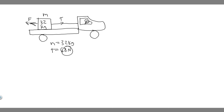So we have these two forces and we know T. To solve this, we use F = ma. We take the sum of forces in the x-direction. The sum equals zero because the crate is not moving relative to the truck — we're finding the threshold point where it just doesn't slide.